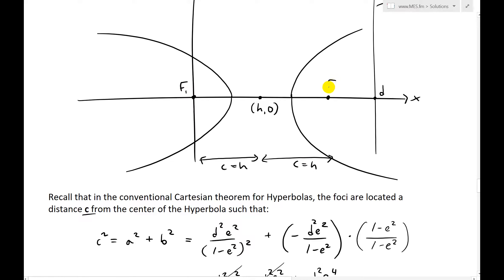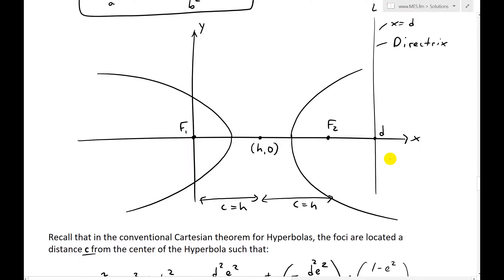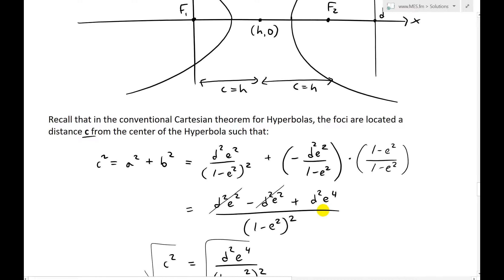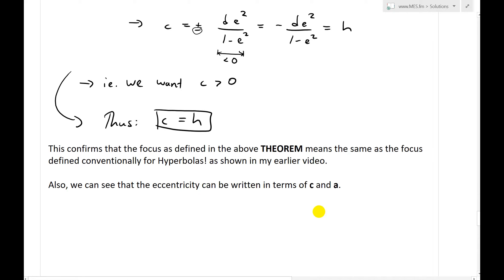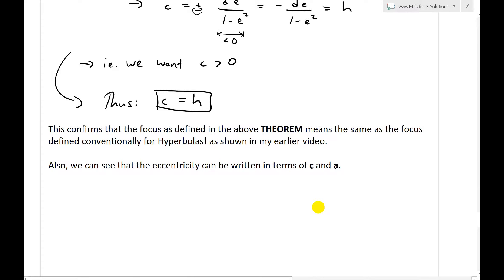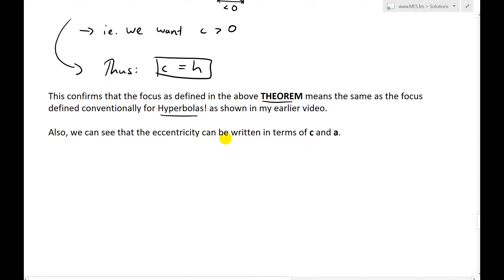So this is f1, and this can be our f2 — the exact same place, since this is a different arrangement but the distance from the center is h. This is indeed where the focus of the unified theorem using the directrix sits. The conventional focus is still there. This confirms that one of the foci is defined exactly the same in both theorems.